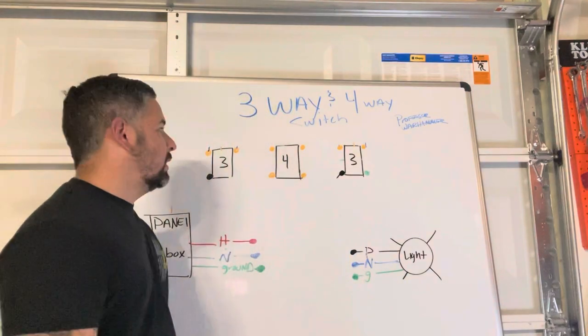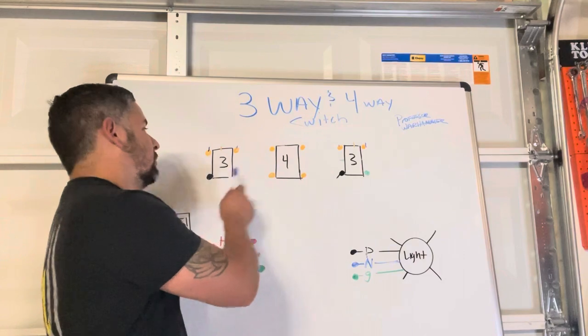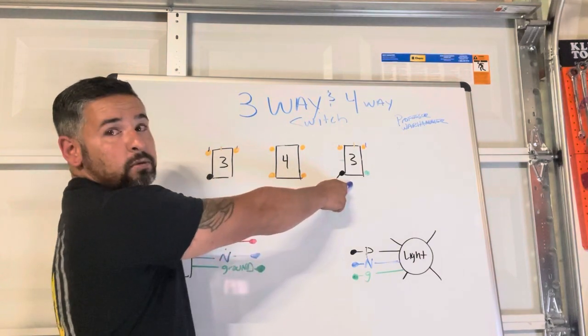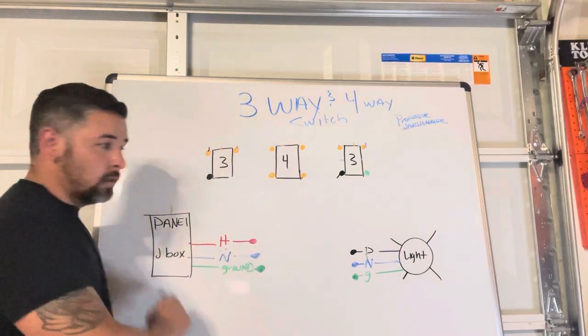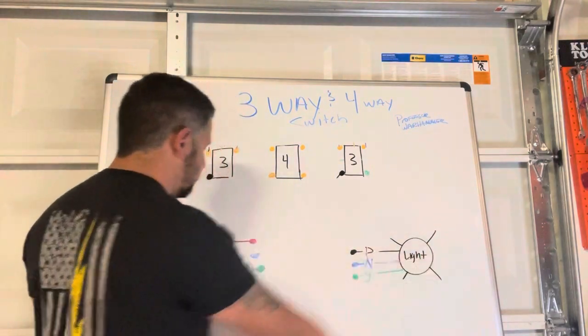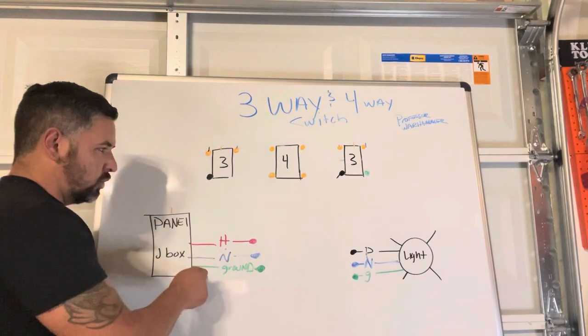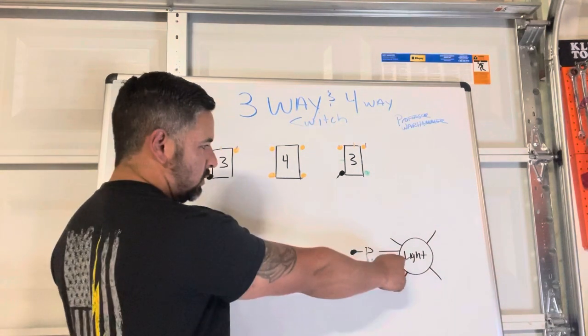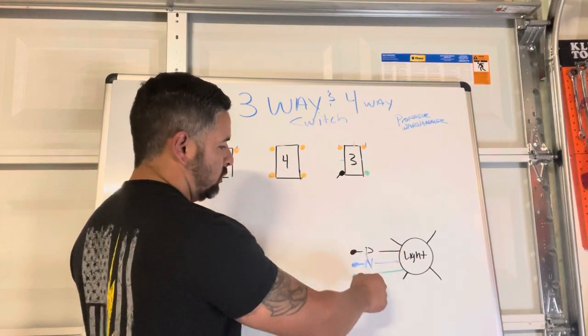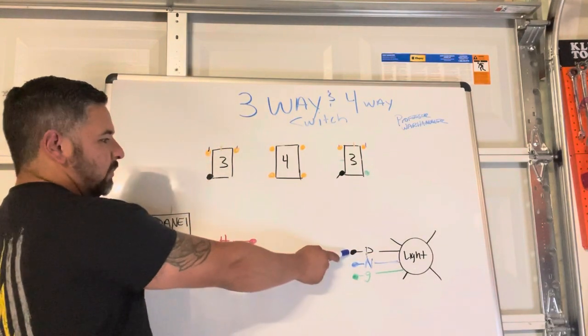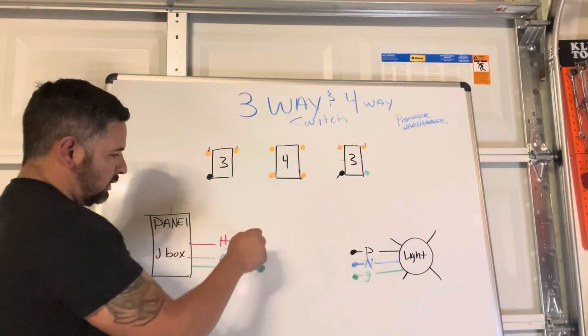Alright, so up here on the board just so you guys know what I'm thinking: three-way, four-way, three-way. We have our panel and our light. Out of your panel you're gonna have your constant hot and your neutral, your ground. Out of your light you're gonna have your pigtails which are gonna be your power, your neutral, and your ground, signified by black, blue, green.